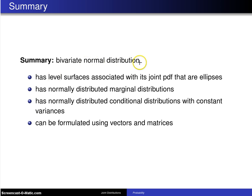Second, the bivariate normal distribution has normally distributed marginal distributions.